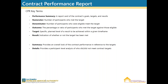Here are a few key terms. Performance Summary is a report card of the contract's goals, targets, and results. The numerator is the number of participants who met the target, while the denominator is the number of participants who were eligible to meet the target. The outcome is the percentage or ratio of participants who met the target against those who were eligible. The target is a specific planned level of a result to be achieved within a given time frame. The result is an indication of whether or not the target has been met.